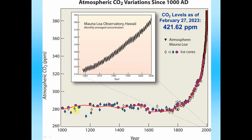Looking at the CO2 record, levels were fairly steady before the industrial revolution, then began exponential growth. The direct measurements from 1958 onward show a cyclic nature — CO2 levels are actually lower during spring and summer months when plants are active and absorbing more CO2, and higher in winter months when plants are essentially dormant. This cyclic up-and-down pattern is due to seasonal variability, but the overall trend is strongly upward.